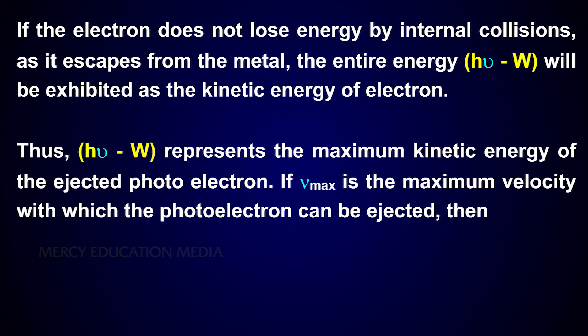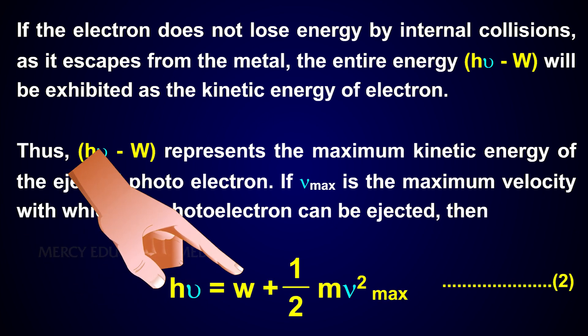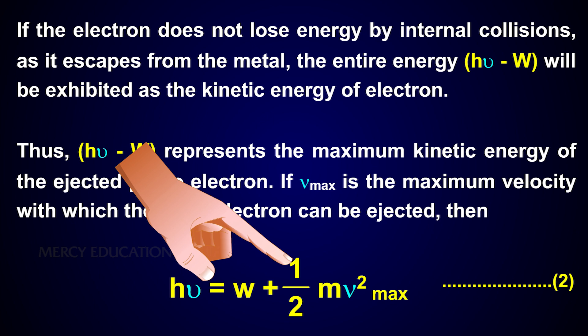Thus, hν - W represents the maximum kinetic energy of the ejected photoelectron. If v_max is the maximum velocity with which the photoelectron can be ejected, then hν = W + ½mv²_max. This is the second equation.